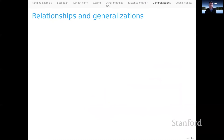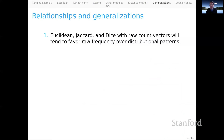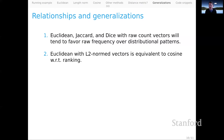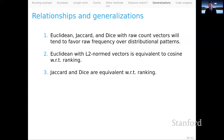Let's close with some generalizations and relationships. Euclidean as well as Jaccard and Dice with raw count vectors will tend to favor raw frequency over other distributional patterns, like the more abstract one from our illustrative example. Euclidean with L2-normed vectors is equivalent to cosine when it comes to ranking — if you want to use Euclidean and you first L2-norm your vectors, you're probably just doing something equivalent to the cosine calculation. Jaccard and Dice are equivalent with regard to ranking — that's something to keep in mind.